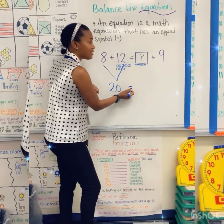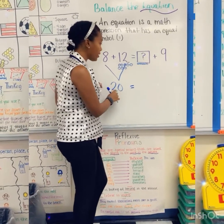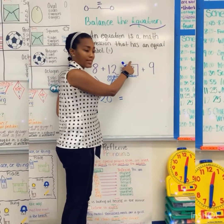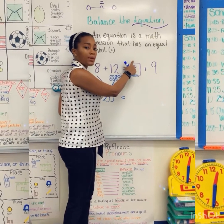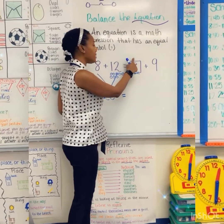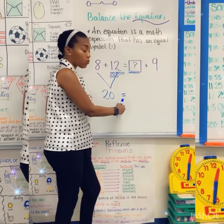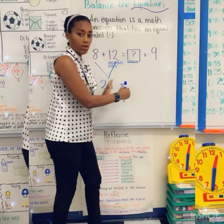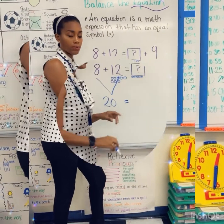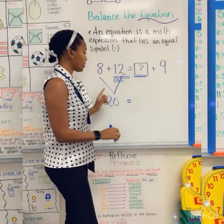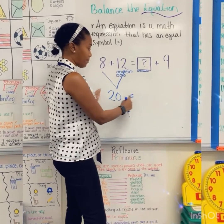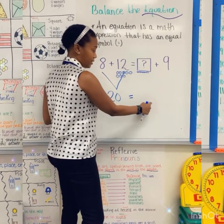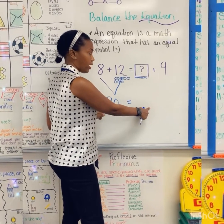That does not mean that I'm going to put 20 in the unknown space — that's not what that means. That means that whatever this side is equal to, I need this side to be equal to. So now that I know that my left side is 20, I have my equal sign here, and my right side needs to equal 20 as well.